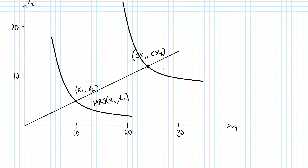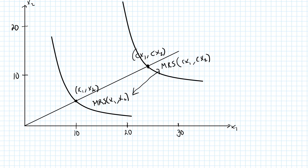There will be another indifference curve through this new bundle, and the slope of the indifference curve here is MRS at cx1, cx2. So here's the point: if preferences are homothetic, then the slope of the indifference curve at x1, x2 must be the same as the slope of the indifference curve at cx1, cx2, no matter which value for c we pick. That is, these two must be the same. Of course, this is not true in general — it's only true if preferences are homothetic.